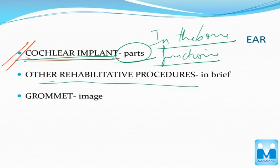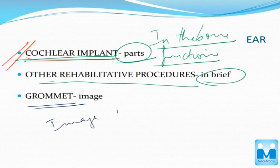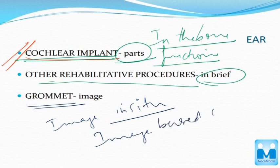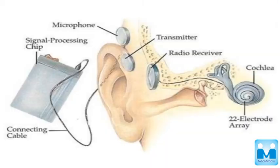Other rehabilitative procedures — just read them briefly; that's enough, you don't have to spend much time. See the image in situ — an image-based question may come. This is what I was talking about — the cochlear implant with its various parts. You have to know the function of each part in detail.